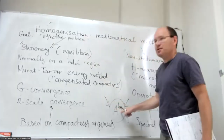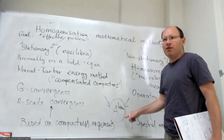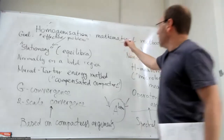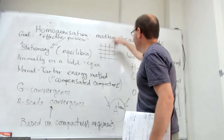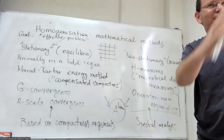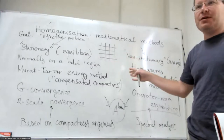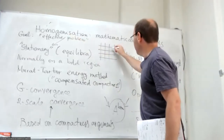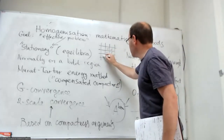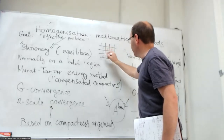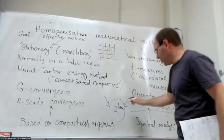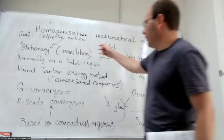We want to talk about some sort of measure of closeness of the original problems and the problem we want to propose as an effective problem under this procedure of homogenization. The goal is to produce some kind of effective problem. In this classical context, this matrix is referred to as the effective matrix.